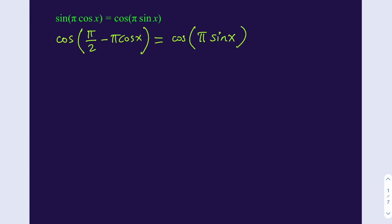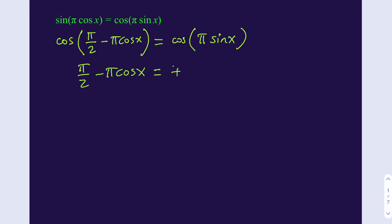What we're going to do is solve this equation. If cosine alpha equals cosine beta, then I can write down this as: pi over 2 minus pi cosine x is going to equal — now we have two situations here. Either the two angles are equal or one of them is the inverse of the other. So I can write plus or minus pi sine x, then just add multiples of 2 pi. Here n is an integer.